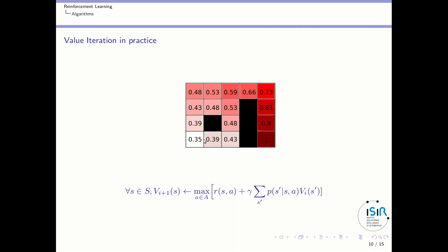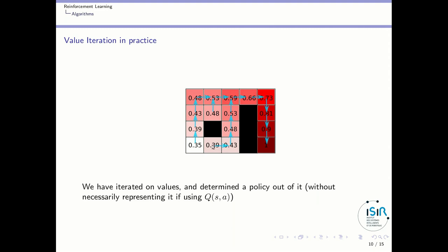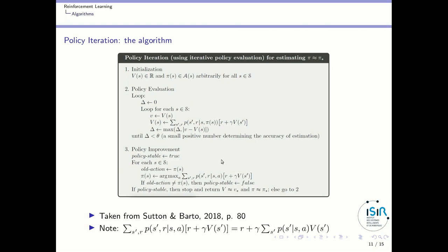So we have just iterated on values without taking care of the policy, and finally we determine the policy out of those values without using Q(s,a). I could do the same with Q(s,a), but that's not what I do in this class.